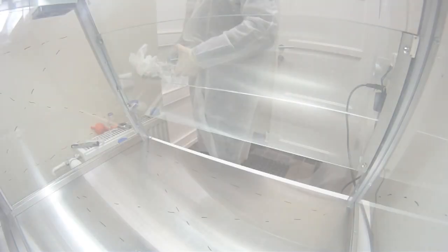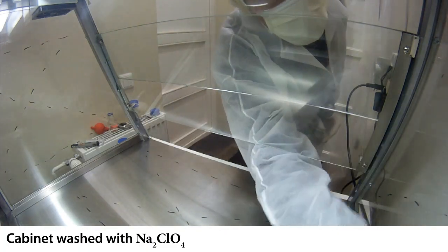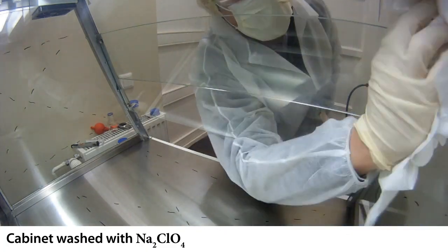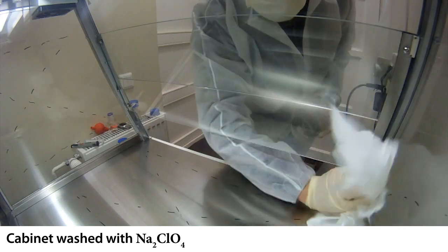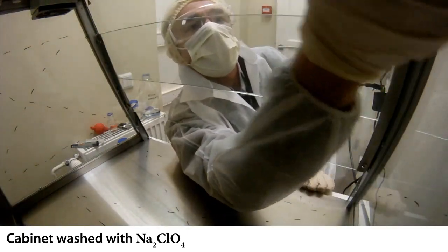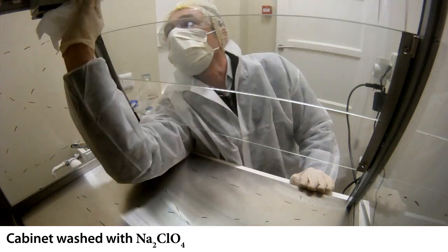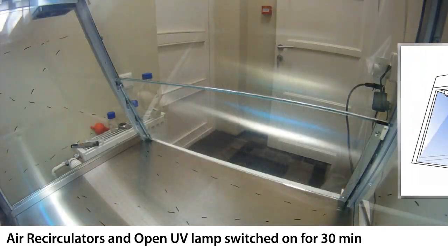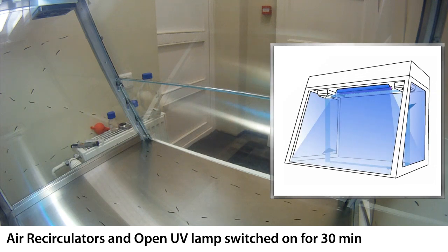Before we start, cabinet must be prepared by washing with Natrium Chlorate, followed by UV air circulation and open UV lamp irradiation.